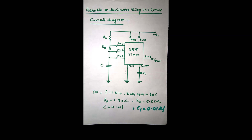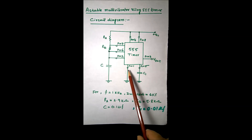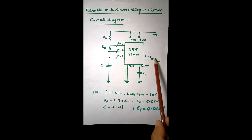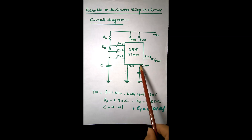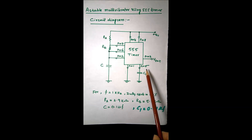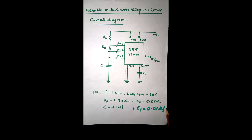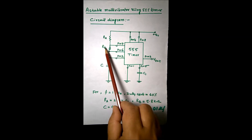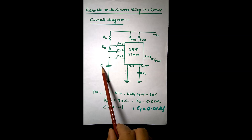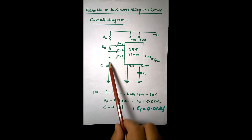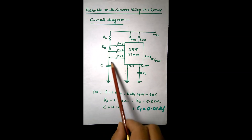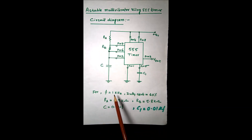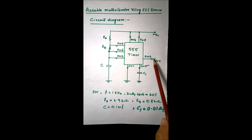The 555 timer is an 8-pin IC. Pin number 8 is to be connected to VCC, and pin number 1 is to be connected to ground. Pin number 3 is the output pin, and pin number 5 is a control pin. By connecting a capacitor of 0.01 microfarad to pin 5, noise can be reduced. Pin number 4 is a reset pin, also to be connected to VCC. RA, RB, and C (the capacitor) are to be connected accordingly as shown in the diagram, and these values determine the output frequency and duty cycle.